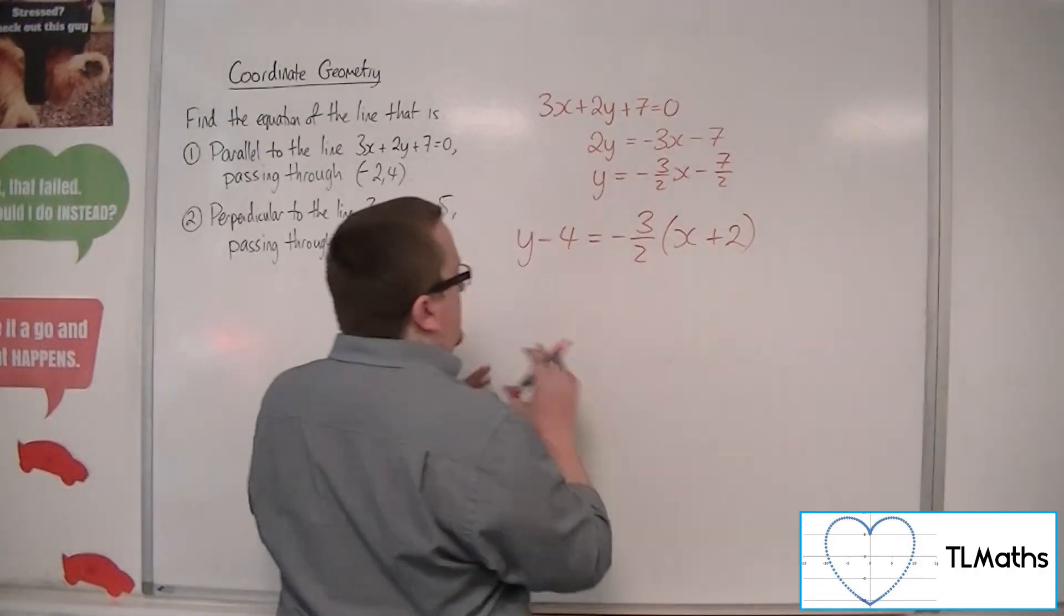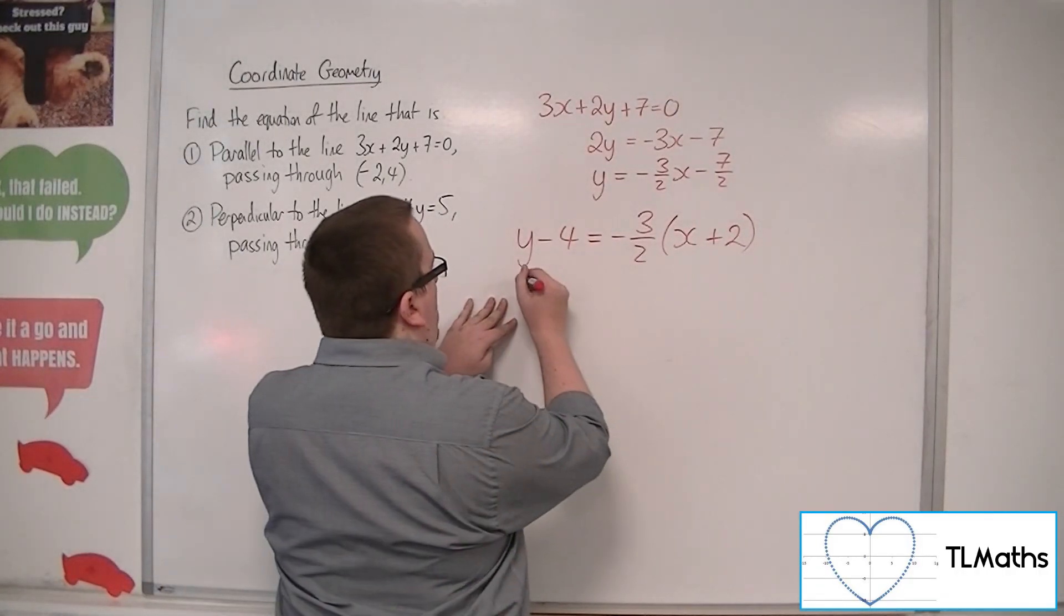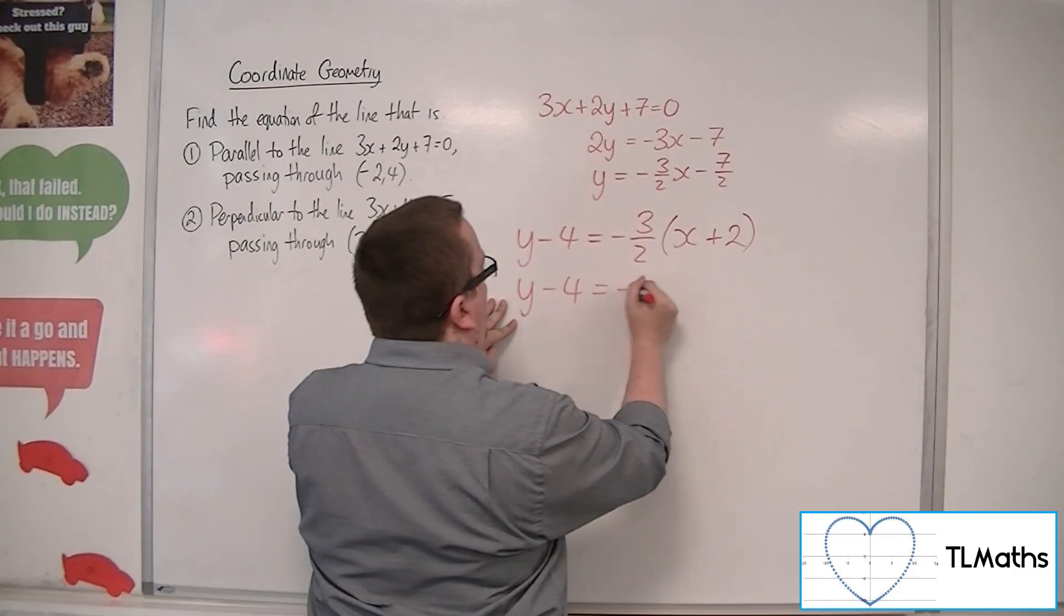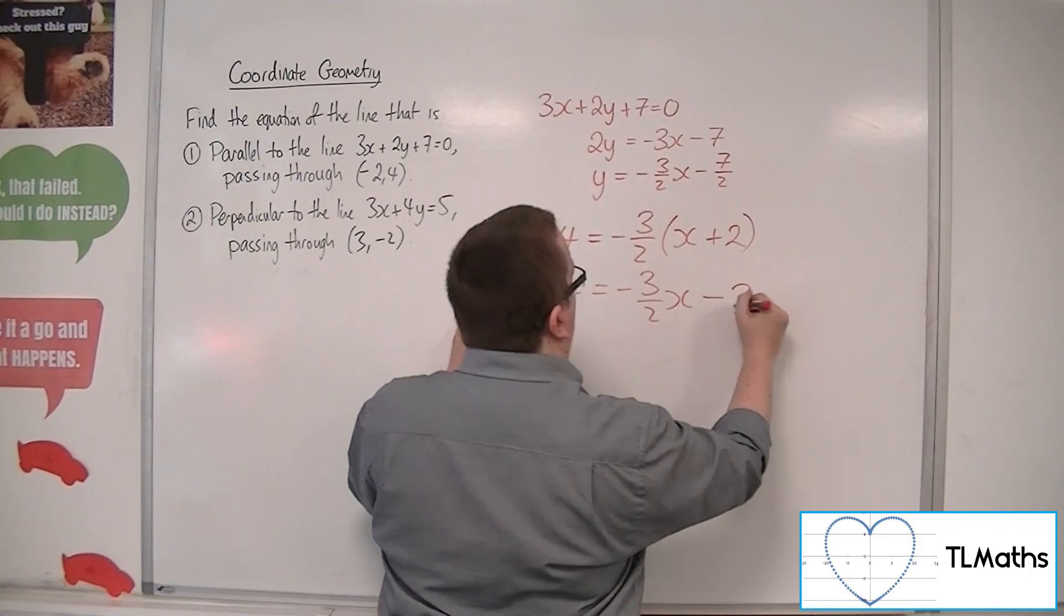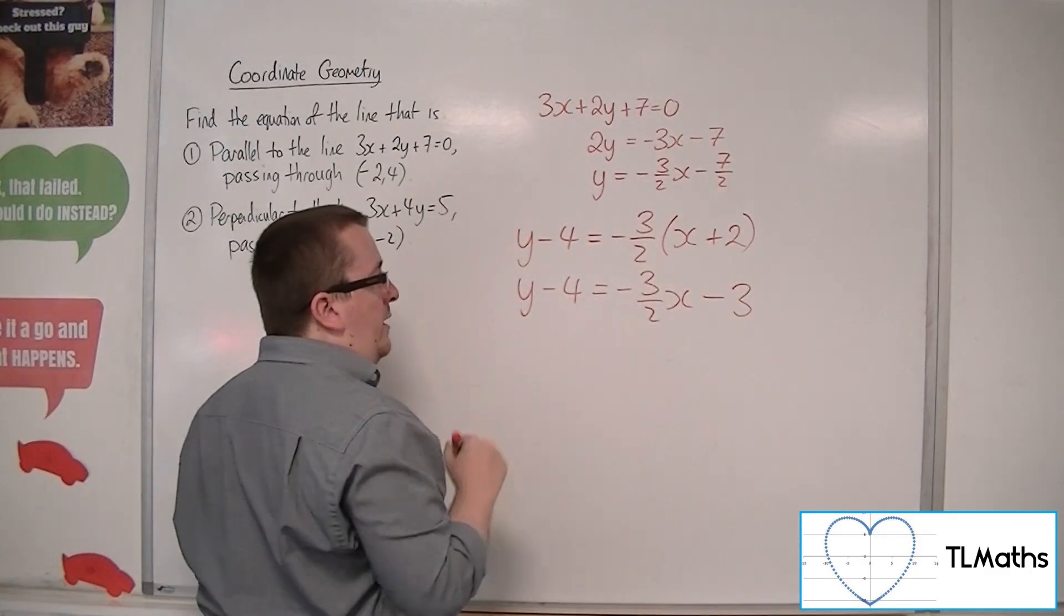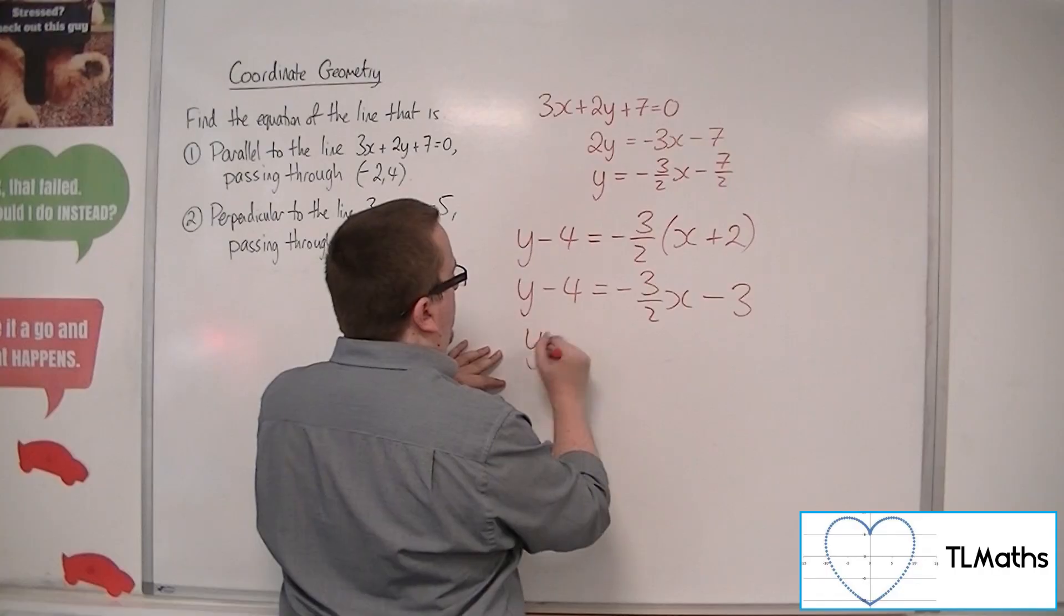Now with this, what I can say is that if I multiply out that bracket, I get minus 3 halves x minus 3, because 2 lots of minus 3 halves is minus 3. Then add the 4 to both sides.